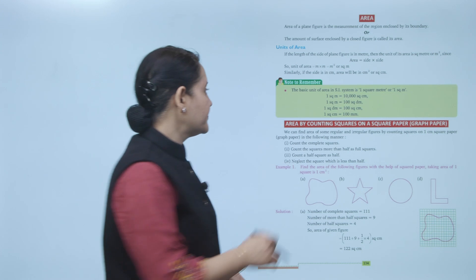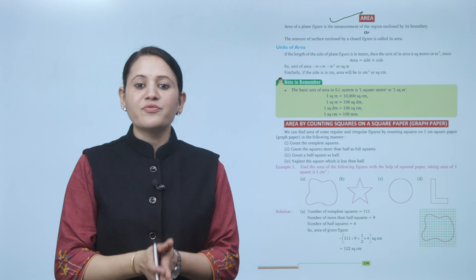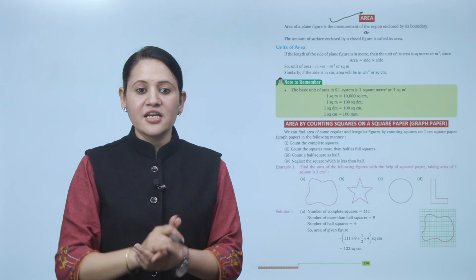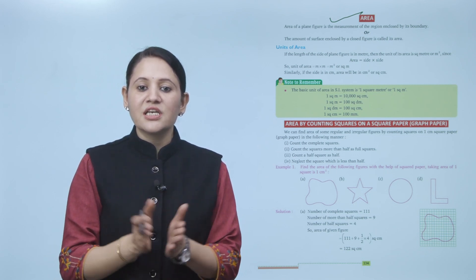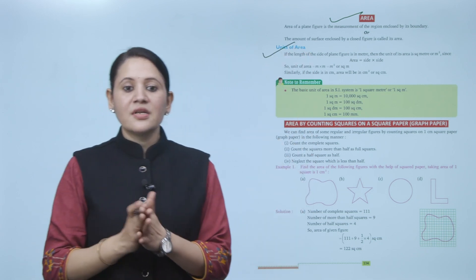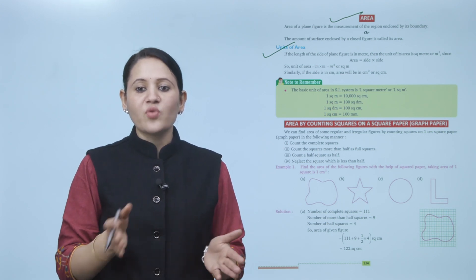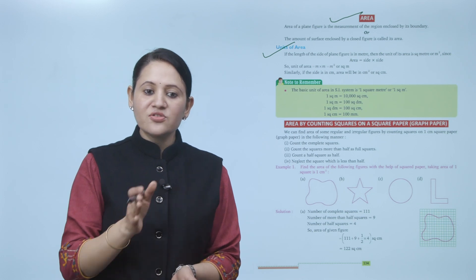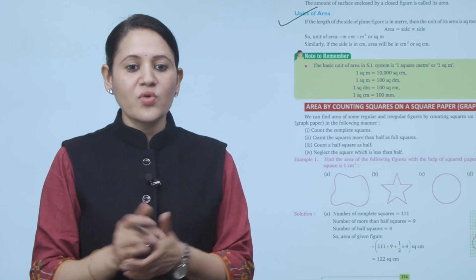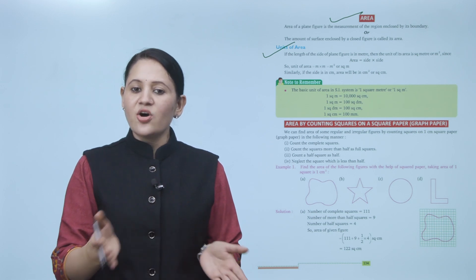Next is area. The area of a plane figure is the measurement of the region enclosed by its boundary — the region inside the boundary. The amount of surface enclosed by a closed figure is called its area. For the unit of area: if the length of the side is in meters, the unit of area is square meters, since area equals side times side — that is m squared. Similarly, if the side is in centimeters, the area will be square centimeters.